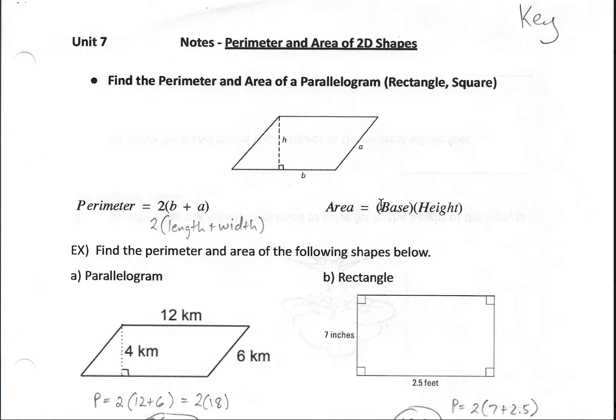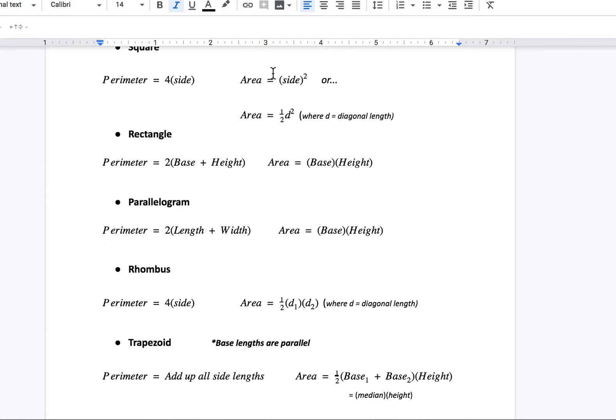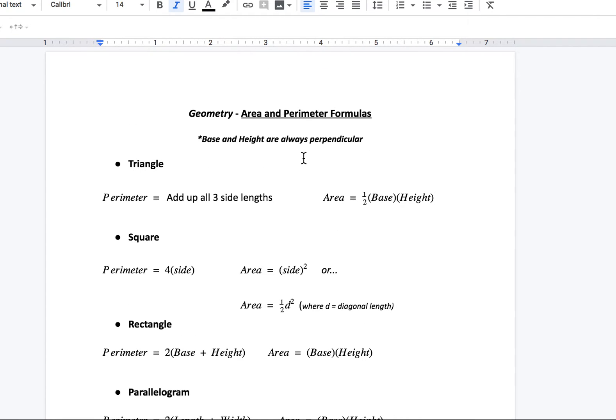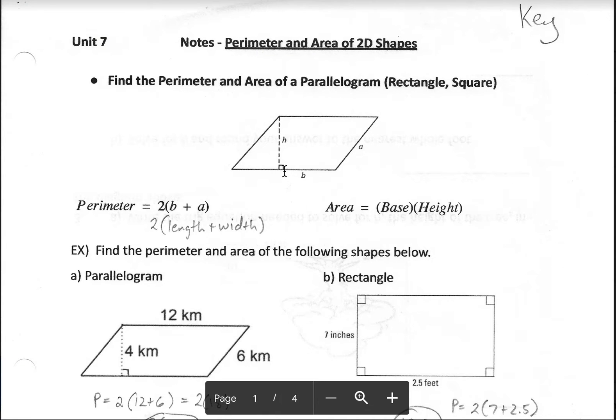So be careful there. In our area formula, we need to use these two sides that are perpendicular, the base and the height. And I try and emphasize that right here in our reference sheet, the base and the height are the perpendicular sides. So look for that right angle symbol there to kind of clue you in as to what two values to use when plugging in and finding the area of the shape.